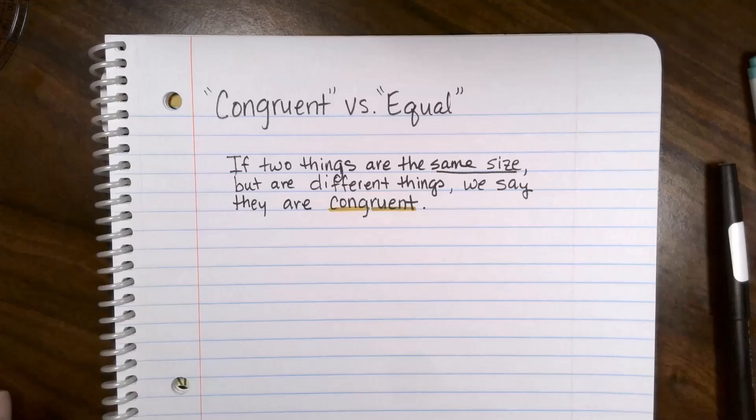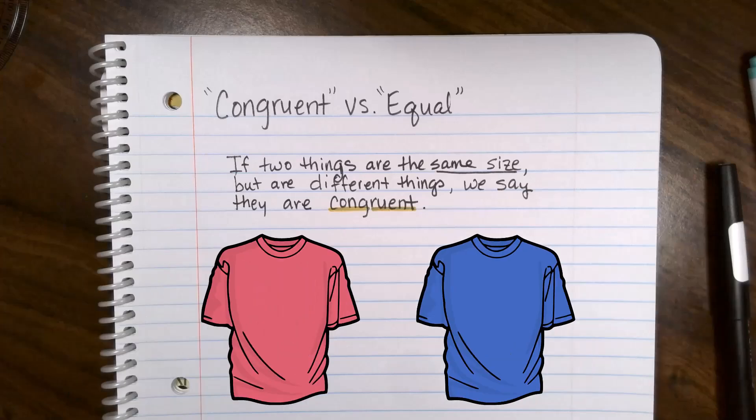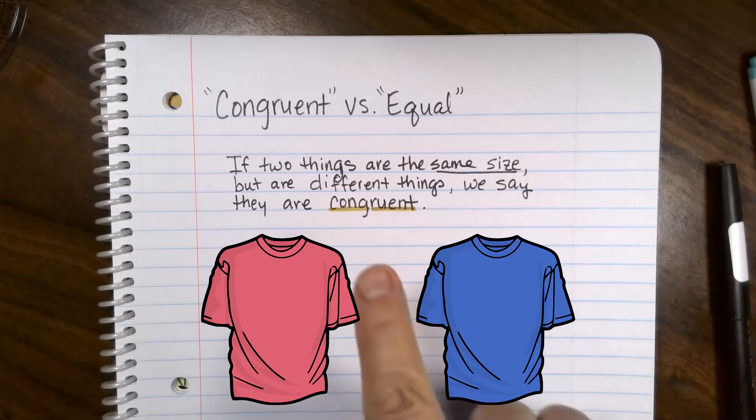If you have two shirts that are the same size, they're going to be congruent, but they're two separate things. You might have a red shirt and you might have a blue shirt. They're two separate things, but they're the same size, so we say they're congruent.